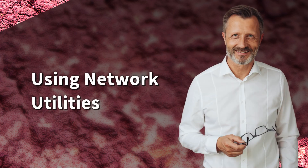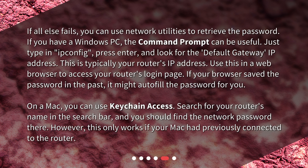Using network utilities: if all else fails, you can use network utilities to retrieve the password. If you have a Windows PC, the command prompt can be useful. Just type in ipconfig, press enter, and look for the default gateway IP address — this is typically your router's IP address. Use this in a web browser to access your router's login page. If your browser saved the password in the past, it might autofill the password for you.